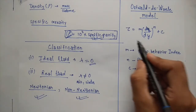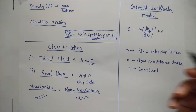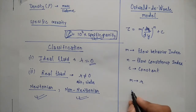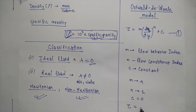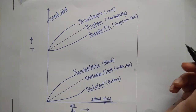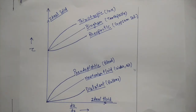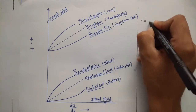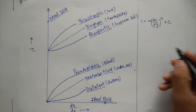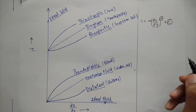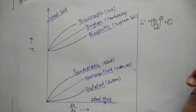This equation can be transformed into Newton's law of viscosity if we substitute M as mu, n as 1, and c as 0, which gives tau equals mu times du/dy — Newton's law of viscosity. Based on the values of n and c, we can draw a graph between tau and velocity gradient du/dy.